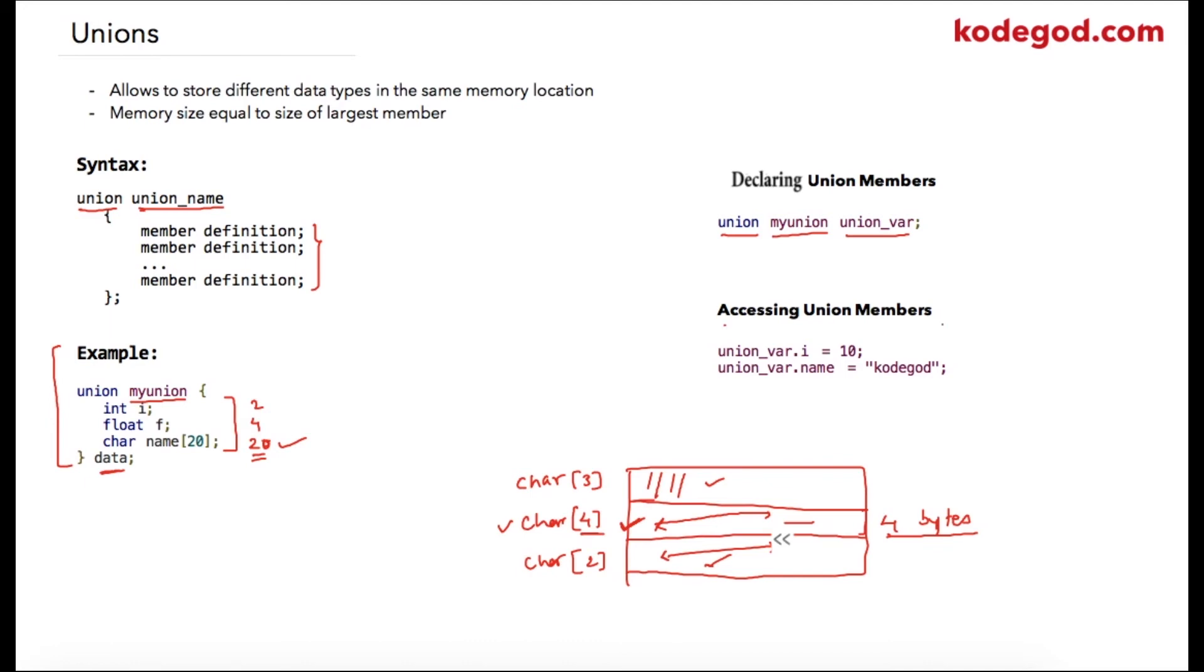union_var.i = 10, which is similar to accessing struct members. Now suppose these to be two consecutive statements in your program. Once you write this statement, the value will be stored into the same memory location, but as soon as you write the next statement, the value of i will become something else. So this is a slight disadvantage of using unions - they can change other values indirectly.